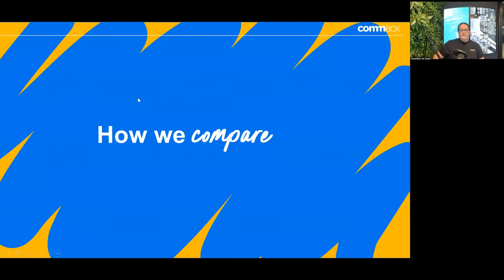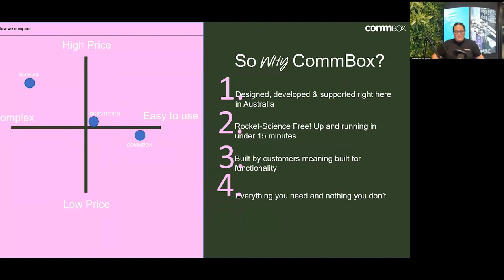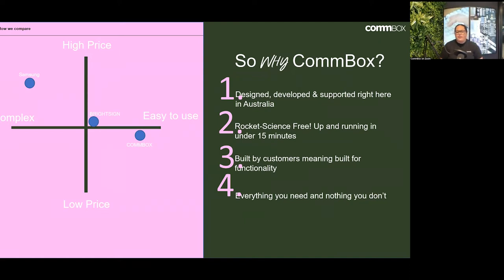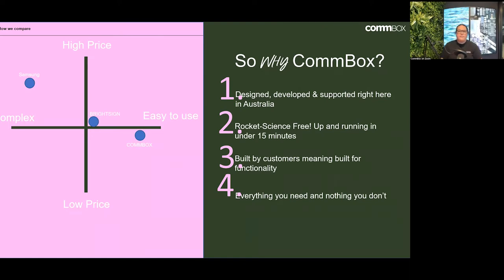Let's look at how we compare to the digital signage market as a whole. The key competitors I see here in Australia are Samsung and BrightSign, which we come across quite frequently. Samsung and BrightSign are very feature-rich, but if you apply the 80-20 rule — 20% of the features are used by 80% of customers and present 80% of the value — what we've done with Commbox is really focus on the key features our customers are going to use. So for 80% of your customers, Commbox is going to be the right fit.